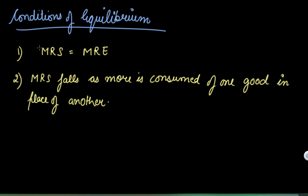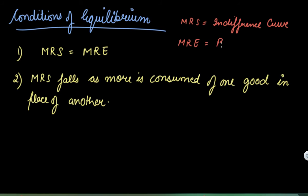Condition one: your marginal rate of substitution (MRS) is equal to your market rate of exchange (MRE). The MRS is the result of the indifference curve, and the market rate of exchange is related to your budget line. So when MRS equals MRE — when the indifference curve is tangent to the budget line — at that point, equilibrium is attained.